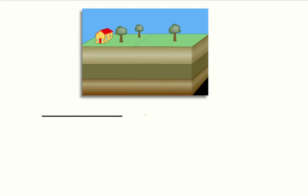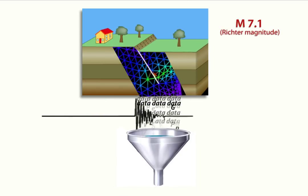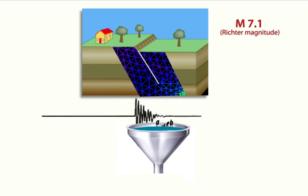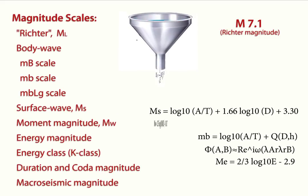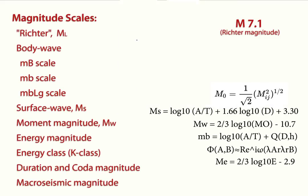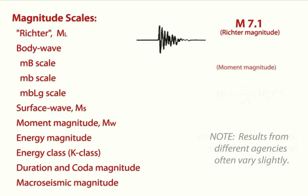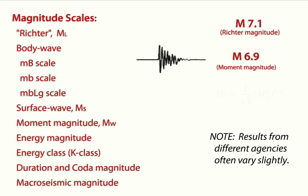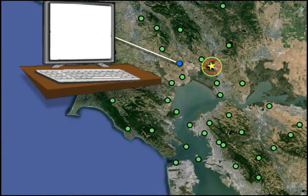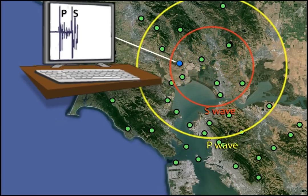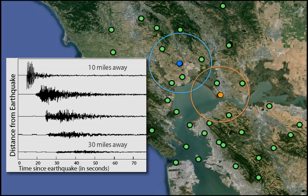Obtaining an accurate preliminary magnitude can be difficult, due not only to the complex processes that occur deep within the Earth, but because there are over a dozen techniques for calculating the magnitude of an earthquake. Some methods give approximate values within seconds of the earthquake, while others require more complete datasets and extensive analysis. Computers use the preliminary amplitude and arrival times for P, S, and surface waves from multiple seismograph stations to derive an initial magnitude and location.